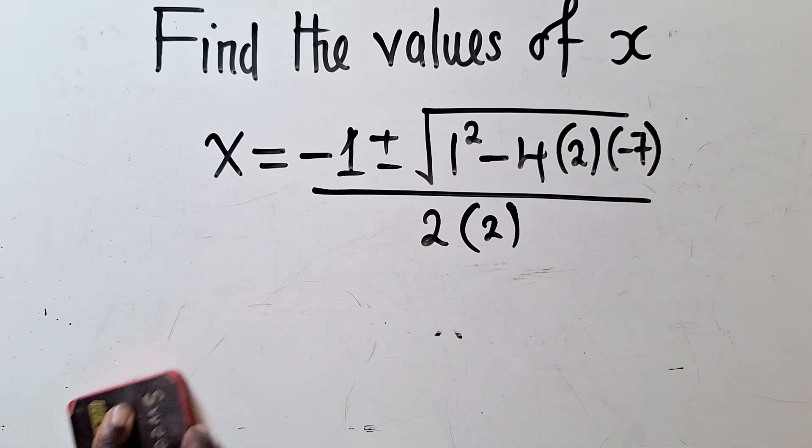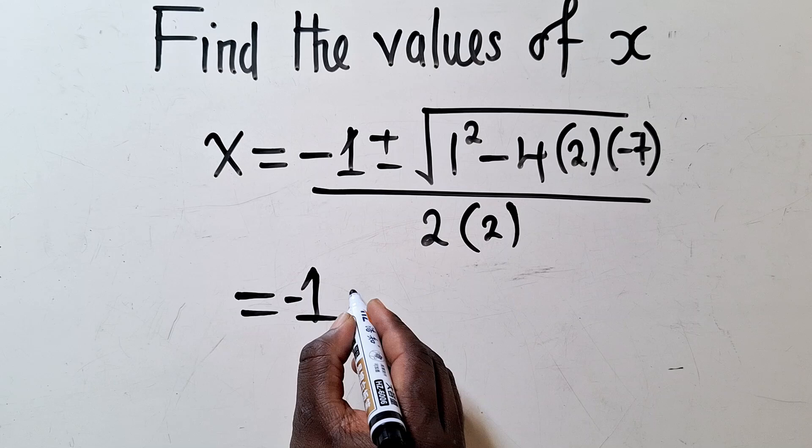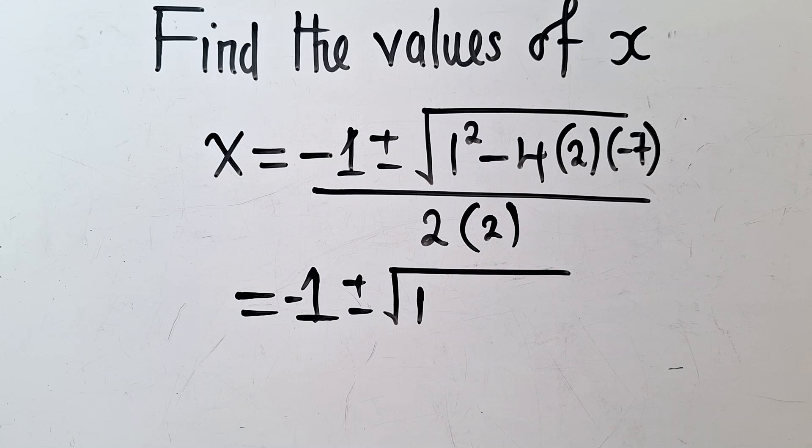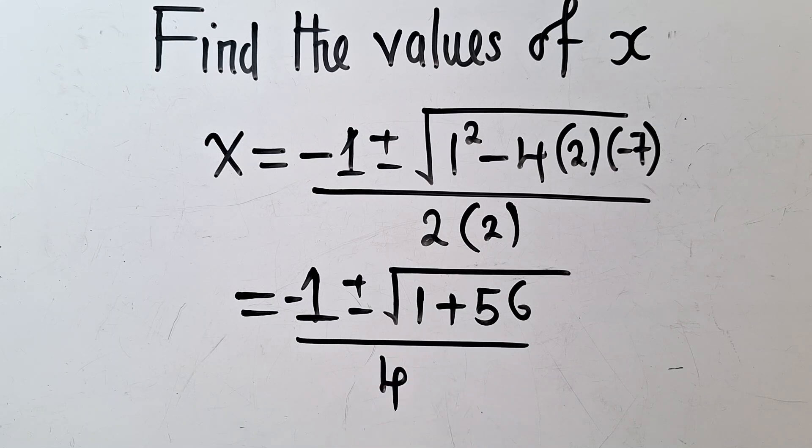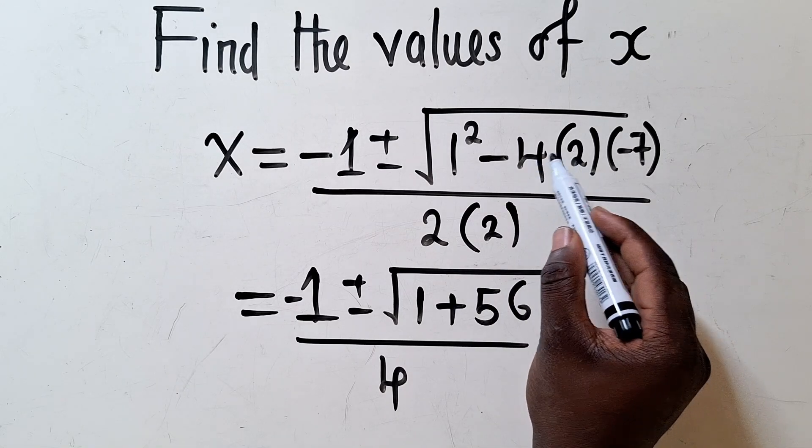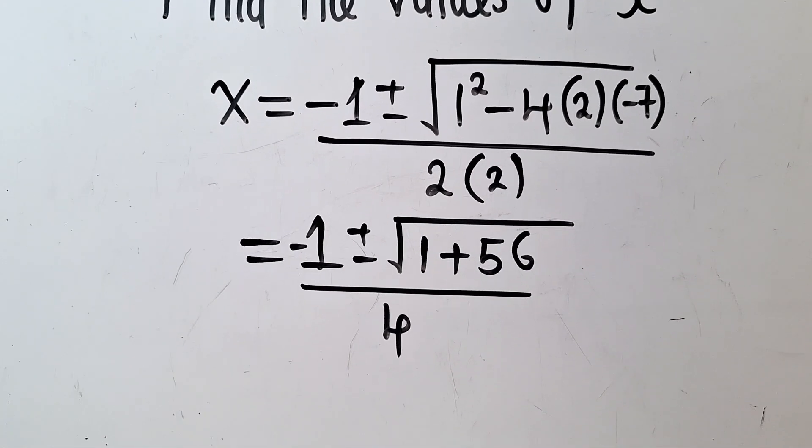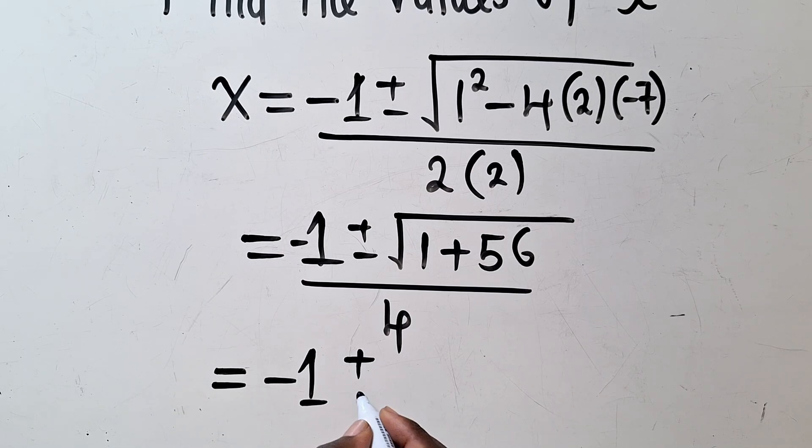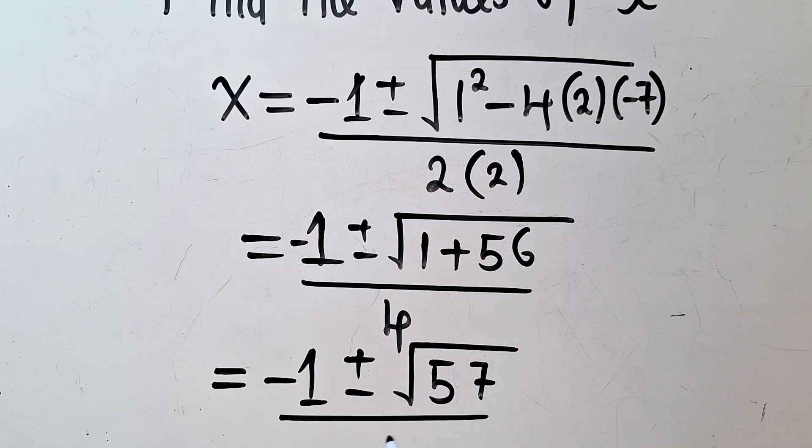We now simplify further. In simplifying this, we are getting negative 1 plus or minus... 1 squared is 1 times 1, which will just give us 1 plus 56 over 4. Negative times negative will give us positive. 2 times 4 or 4 times 2 will give us 8. 8 times 7 is 56.